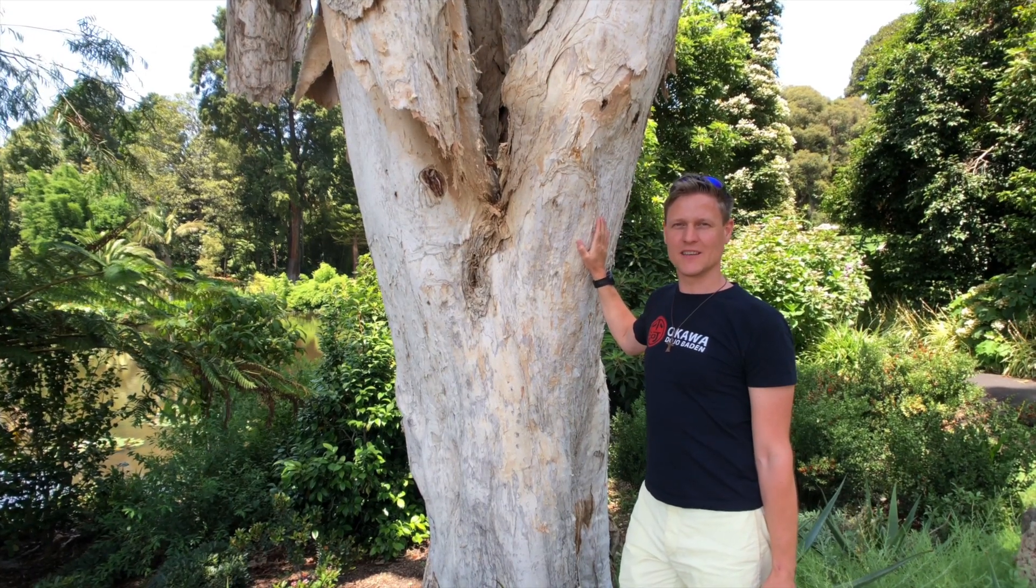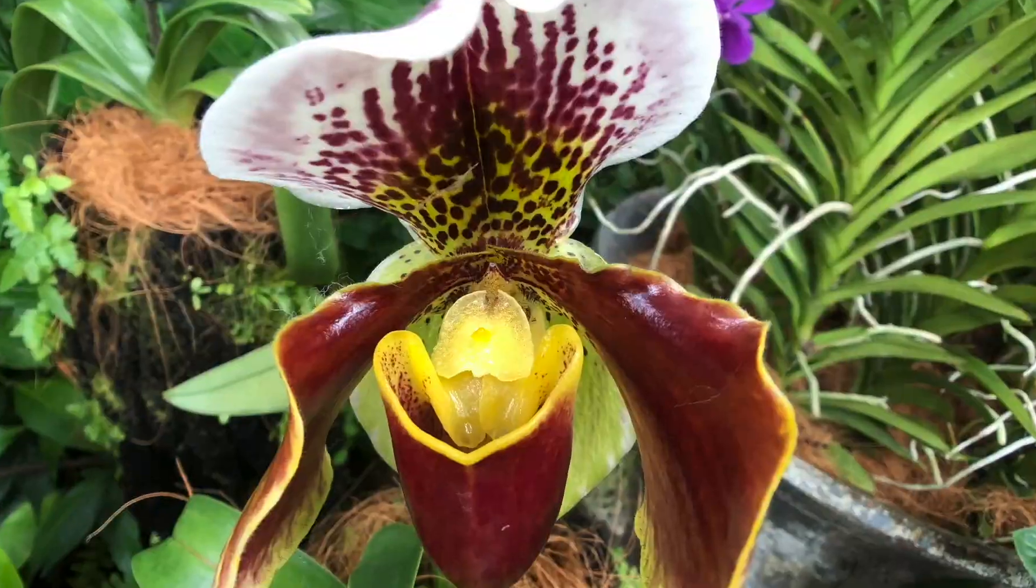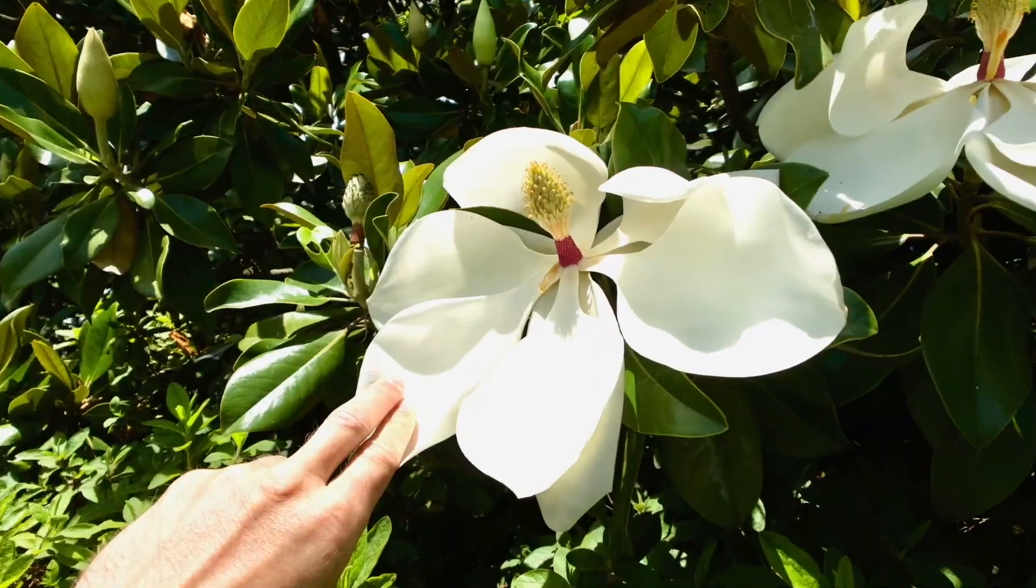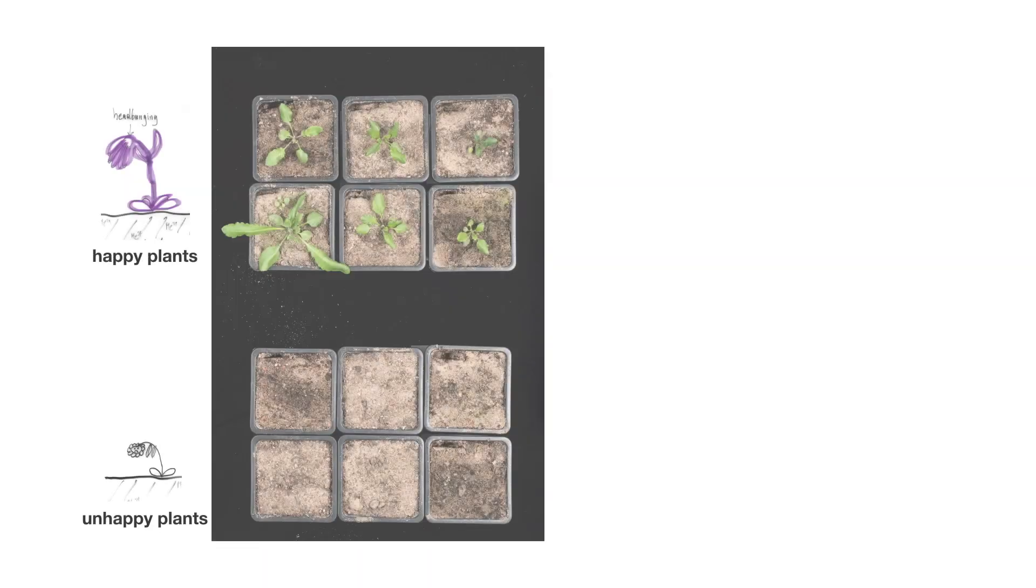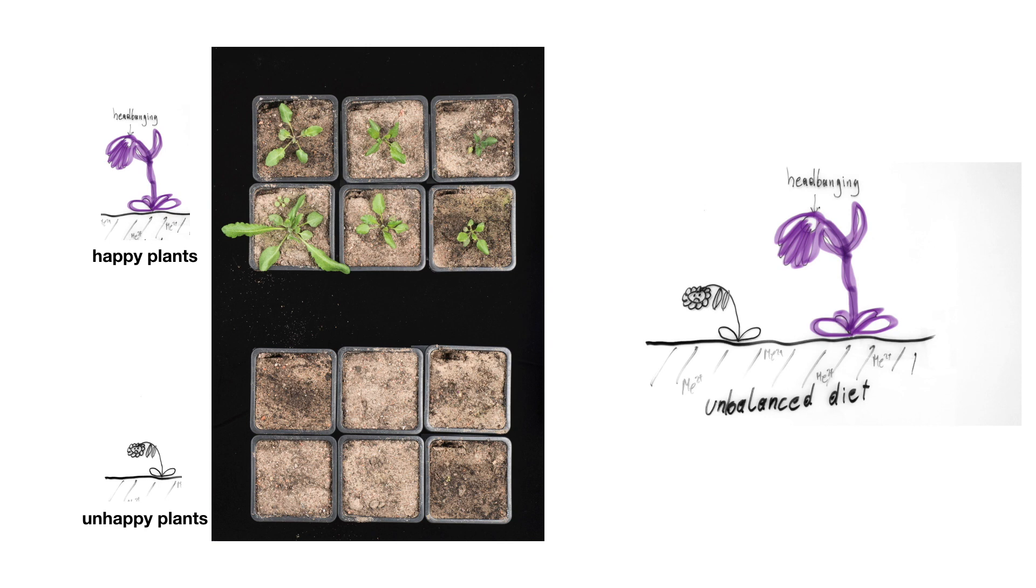My name is Christian Seiler and I am a plant biologist. We want to know why some plants grow happily on an unbalanced diet while other plants suffer.